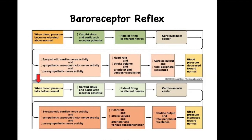Now let's look at the opposite. When your blood pressure falls below normal, keep in mind the baroreceptors are stretch receptors, so they will stop firing since they are not being stretched. The cardiovascular center will then increase sympathetic input to the heart — both the nodes and the myocardium — as well as to the blood vessels. At the same time, parasympathetic input to the nodes will decrease. As a result, heart rate will go up and stroke volume will go up. Recall that increased sympathetic input to the myocardium increases contractility, which is one of the factors that influences stroke volume.